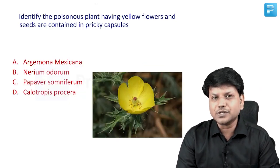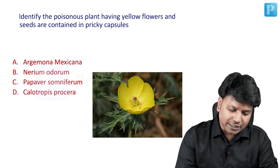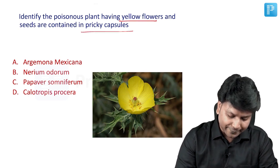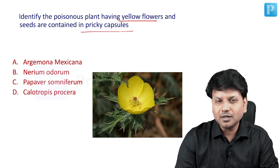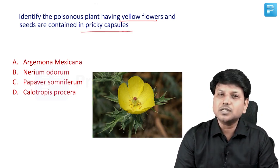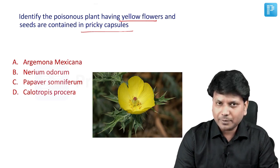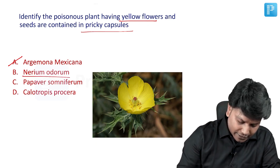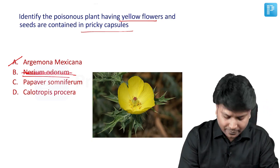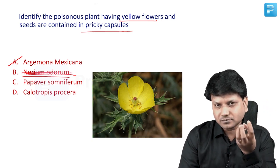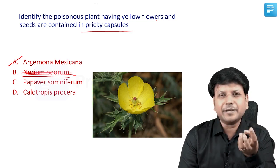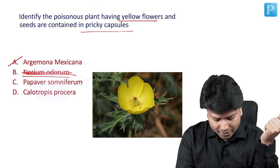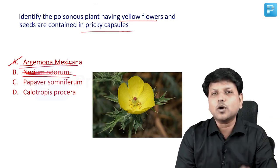A new question for INISET: identify the poisonous plant having yellow flowers with seeds contained in a prickly capsule. The plant is Argemone mexicana — not Nerium odorum, which has bell-shaped yellow flowers, not Papaver somniferum which has the opium capsule, and not Calotropis which is a plant irritant. So this is Argemone mexicana.